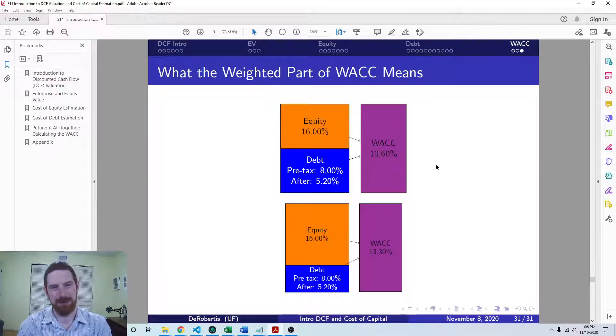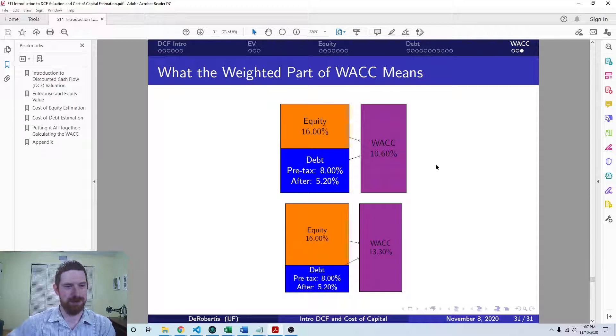So, and then to kind of visualize the effect of those weights, I just made a quick graphic here which shows two companies which have the exact same costs of equity and debt, pre-tax and post-tax cost of debt. The same equity cost is the same. But the first company is evenly split between equity and debt, and the second company is weighted more towards equity. So you can see that resulting WACC is substantially lower, quite a bit lower, for the 50-50 company than it is for the mostly equity company.